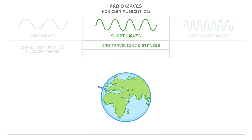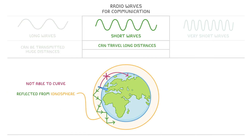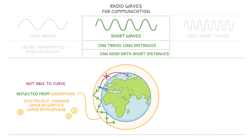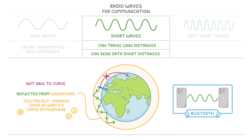Short wave radio signals can also travel long distances, but they're not able to curve around the Earth. Instead, they're reflected from the ionosphere, which is an electrically charged layer of the Earth's upper atmosphere. So by bouncing back and forth repeatedly, they can cover long distances. Short wave radio can also be used to send data over short distances, like for Bluetooth in your phone.